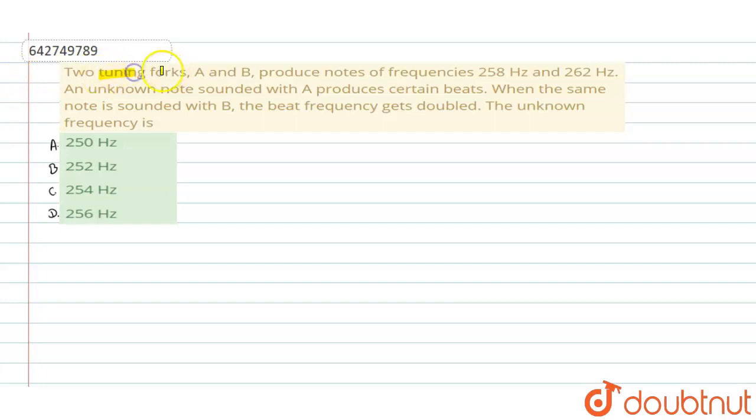Two tuning forks A and B produce notes of frequencies 258 hertz and 262 hertz. An unknown note sounded with A produces certain beats. When the same note is sounded with B, the beat frequency gets doubled.